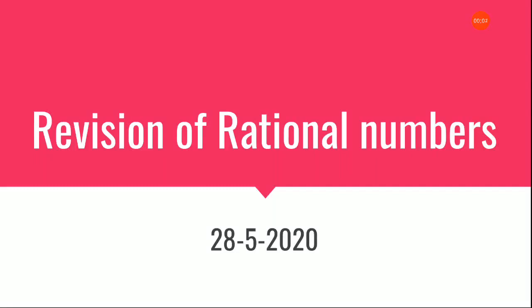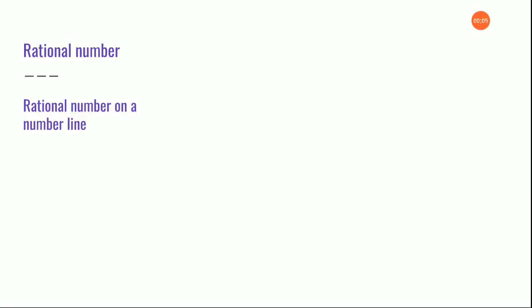Namaste children, today we are going to revise the first few concepts of rational numbers. Shall we begin? First, what is a rational number? Any number that can be written in the form of p by q can be called as a rational number. So almost we can say that all the fractions are rational numbers, and also all the integers can be written in the form of rational numbers.